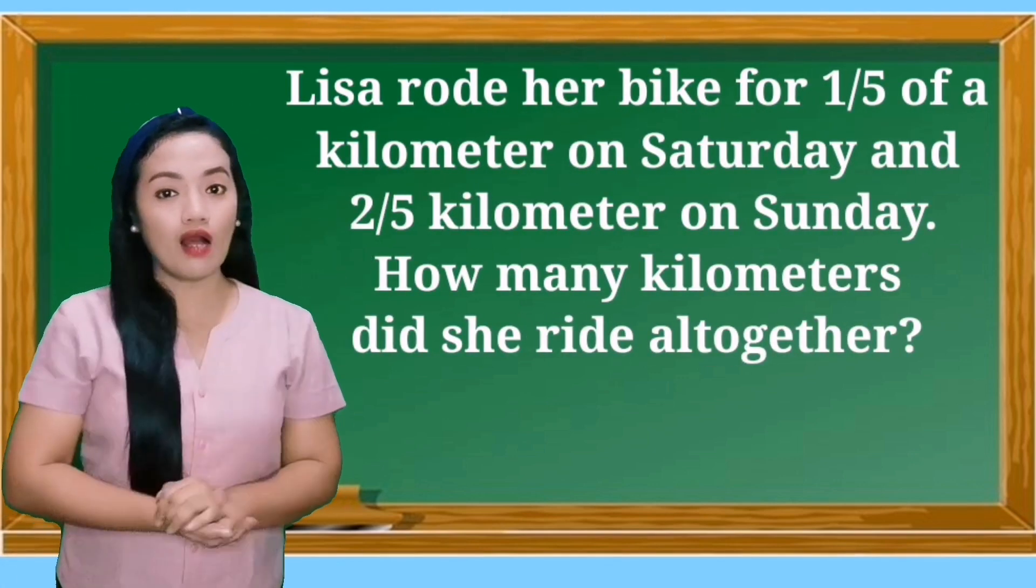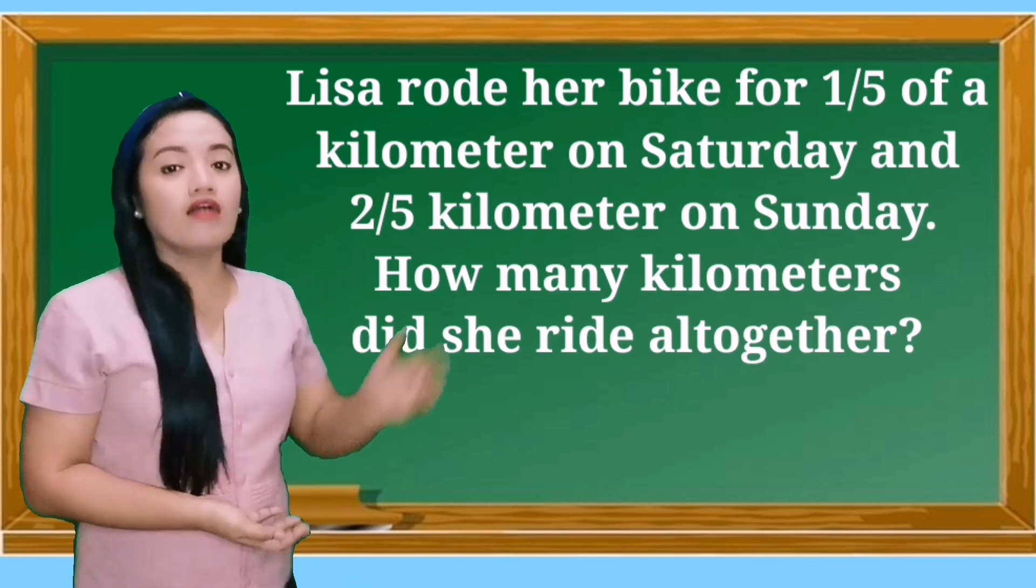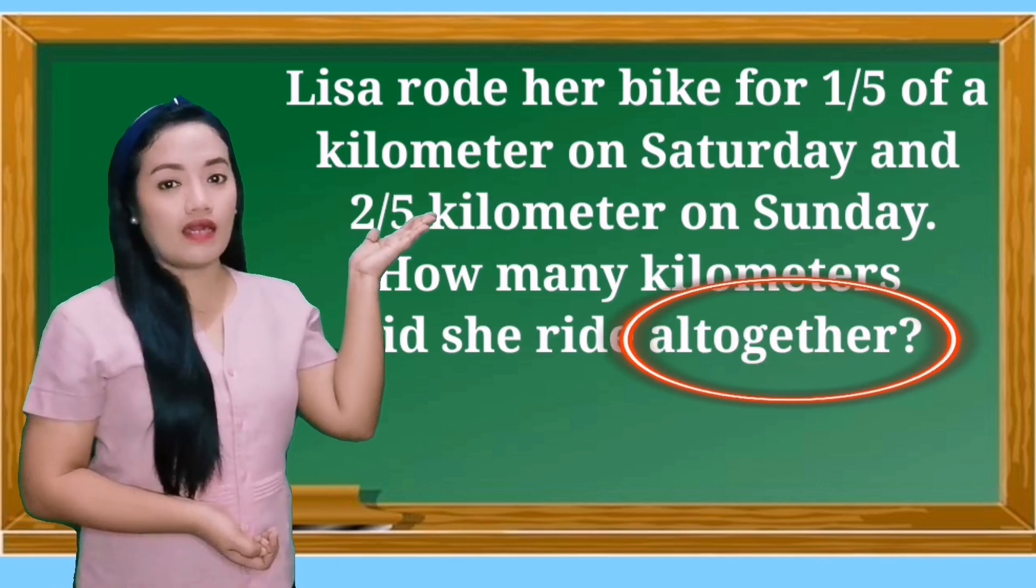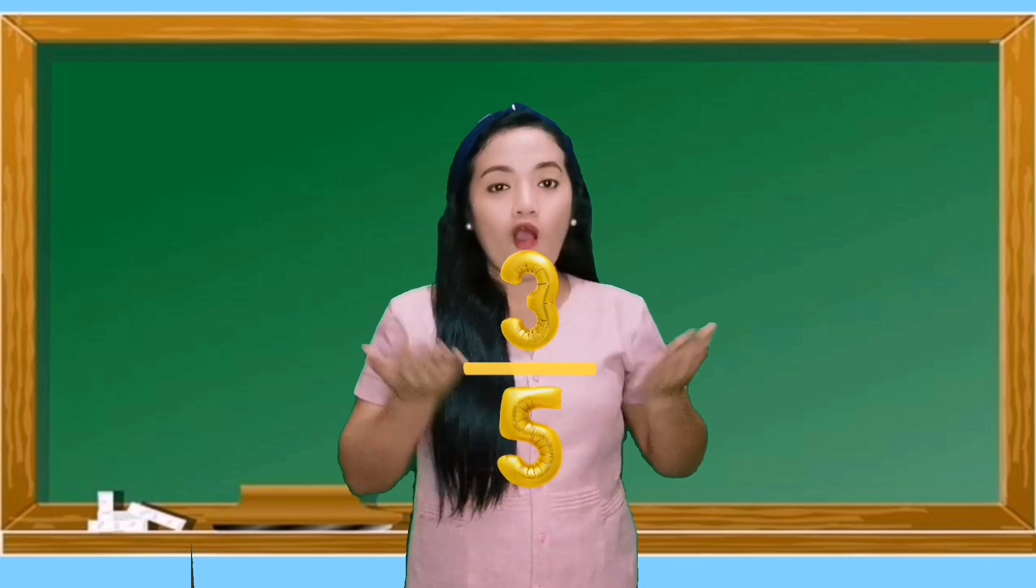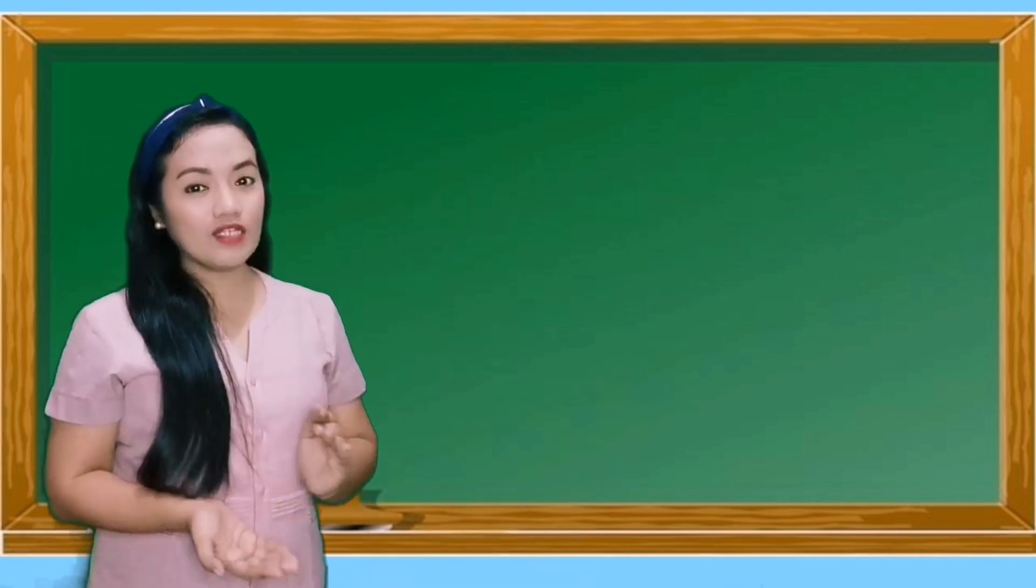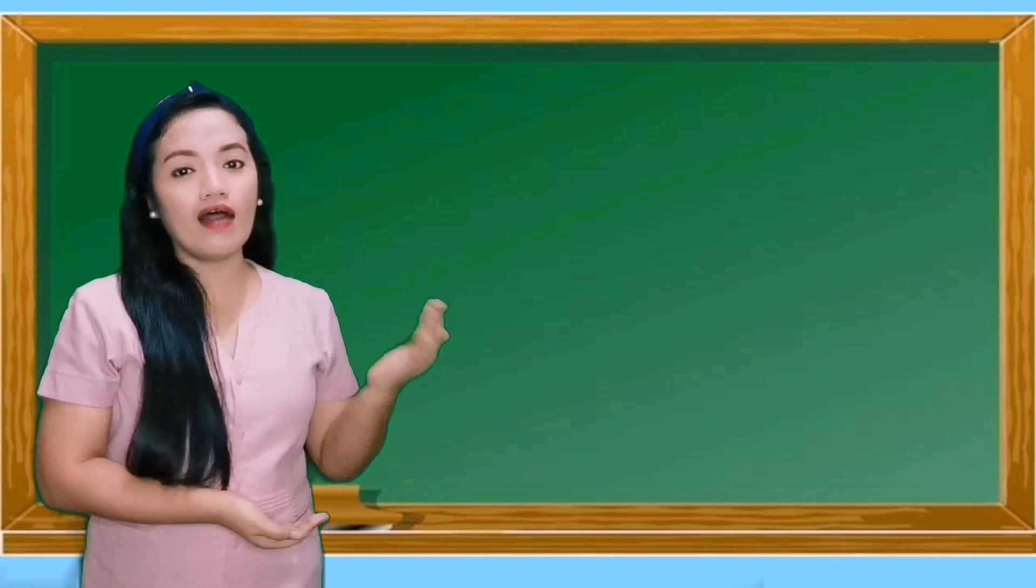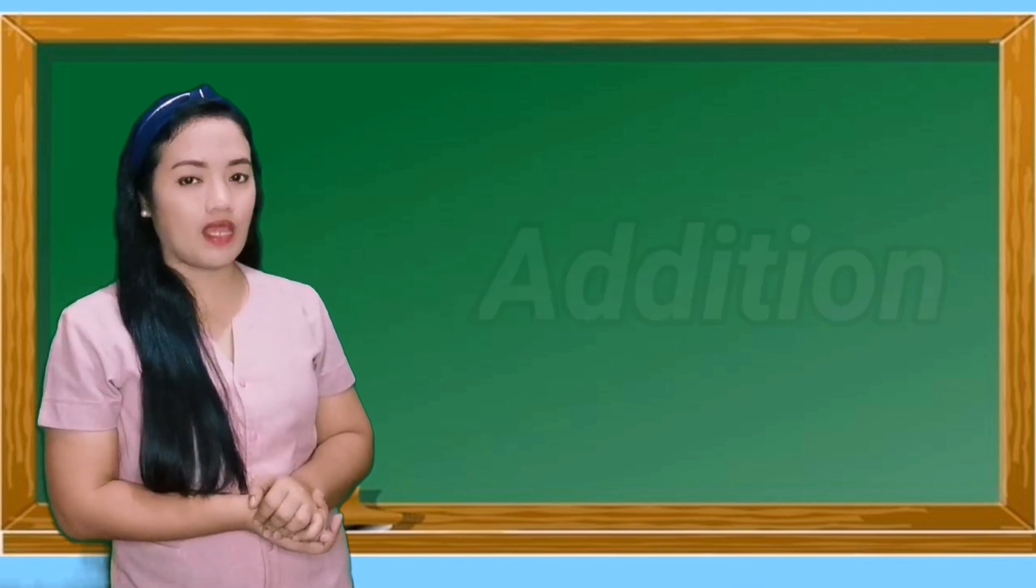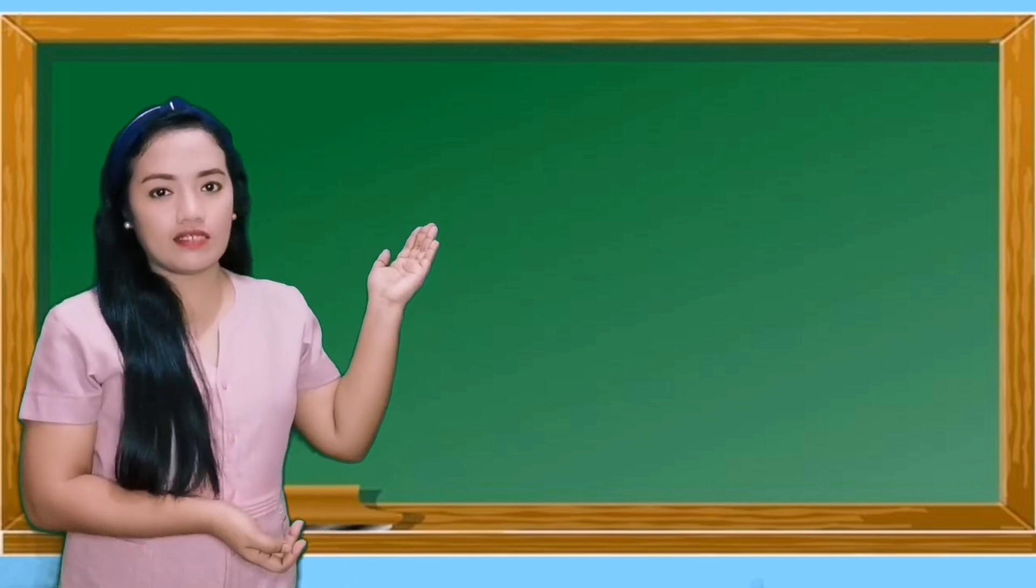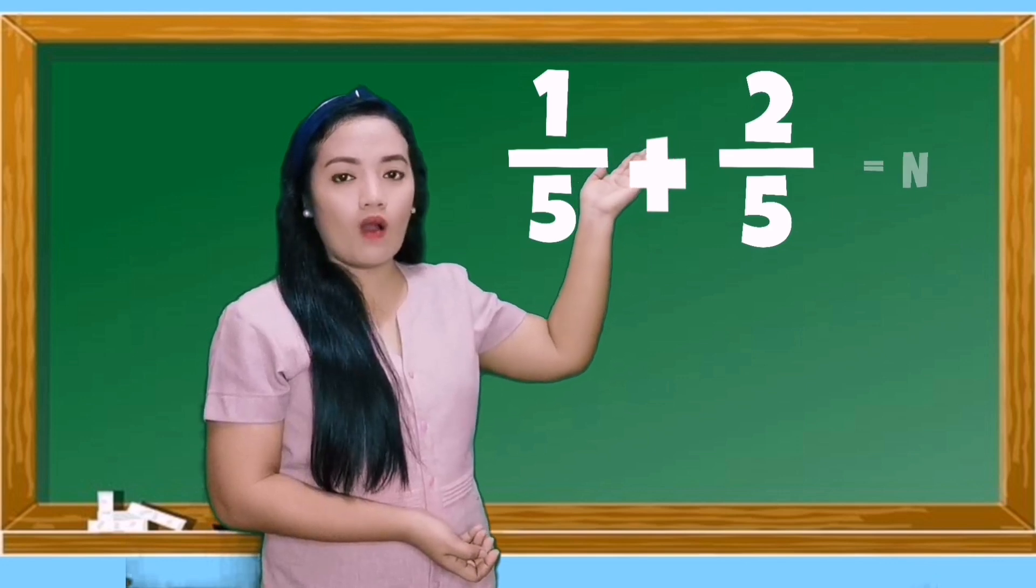Remember to solve a problem you have to look for a keyword that could lead you to an operation. Here the keyword is all together, meaning you have to join them together or add them together. Let us have the solution. Since we already know the keyword all together, we will use addition as our operation. Let us write the number sentence: 1/5 plus 2/5 is equal to n.